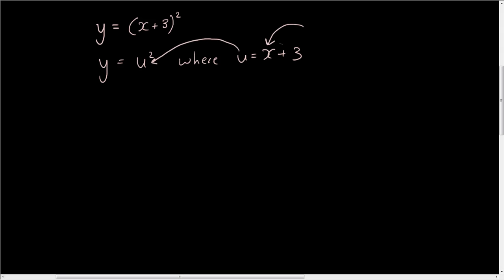Basically we input a number into x, then the output is u, and then the output from u goes into the input of y, and whatever y is is the output. So let's make a table of values to show this process. Let's say x is equal to 0. If we put 0 into x, 0 plus 3 is 3, so u becomes 3. Then that 3 goes into the input of the first function, so 3 squared is 9.